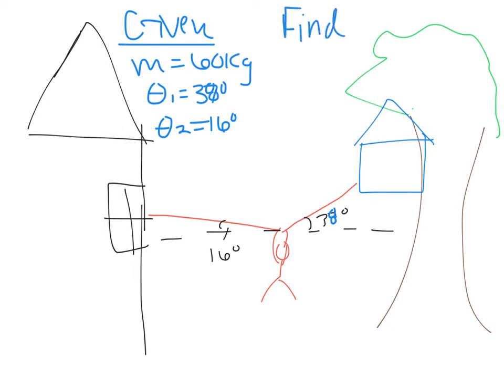What we're trying to find is FT1 and FT2. These are not equal because your angles are not equal. Due to the different angles we do have to solve for two different things.